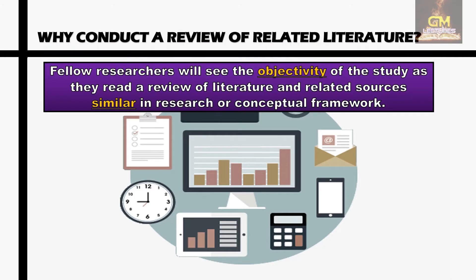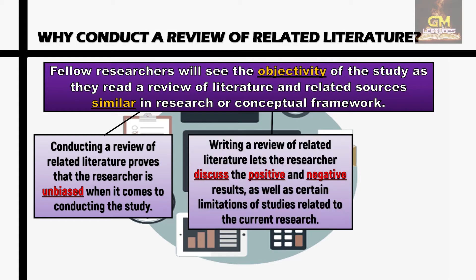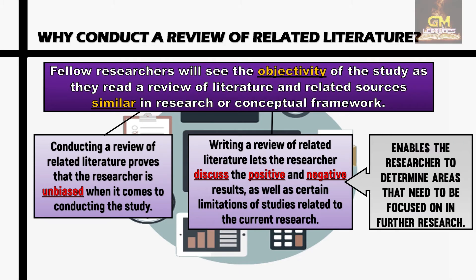Fellow researchers will see the objectivity of the study as they read a review of literature and related sources similar in research or conceptual framework. Conducting a review of related literature proves that the researcher isn't biased when it comes to conducting the study. Also, writing a review of related literature lets the researcher discuss the positive and negative results as well as certain limitations of studies related to the current research. This enables the researcher to determine areas that need to be focused on in further research.